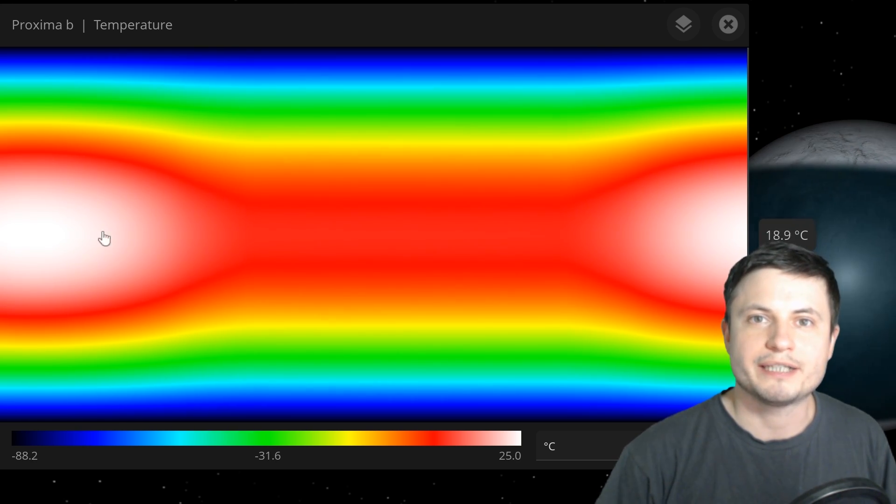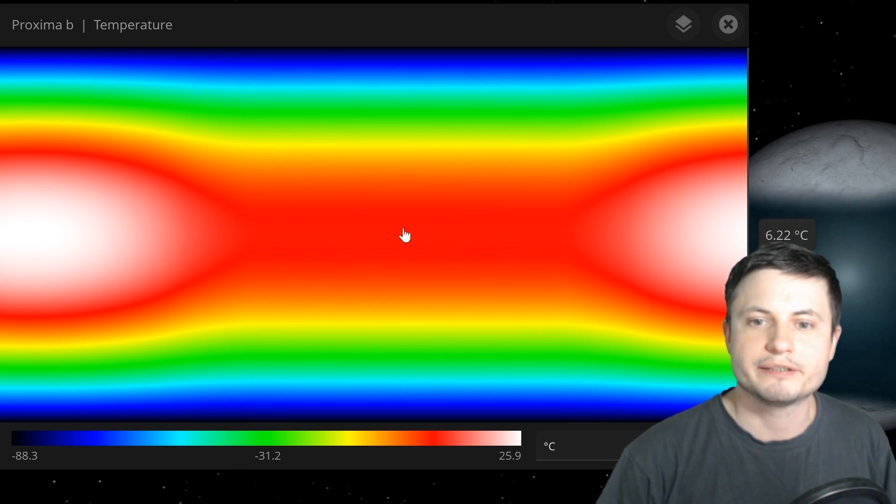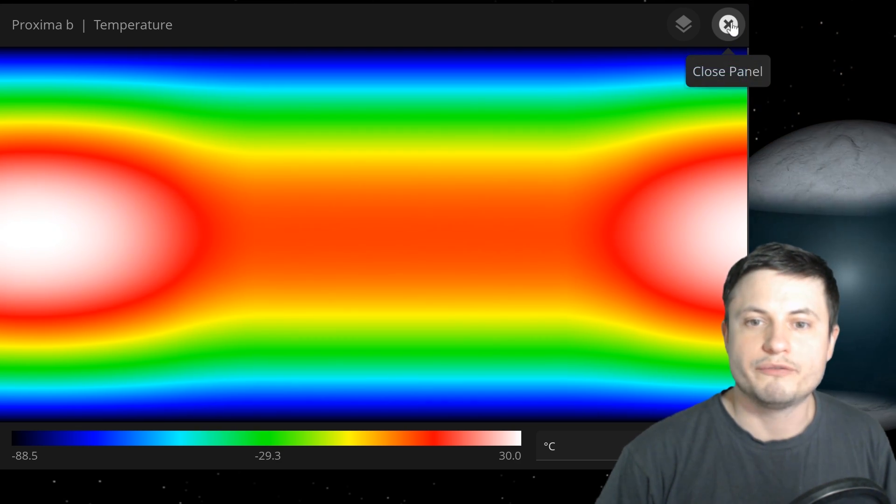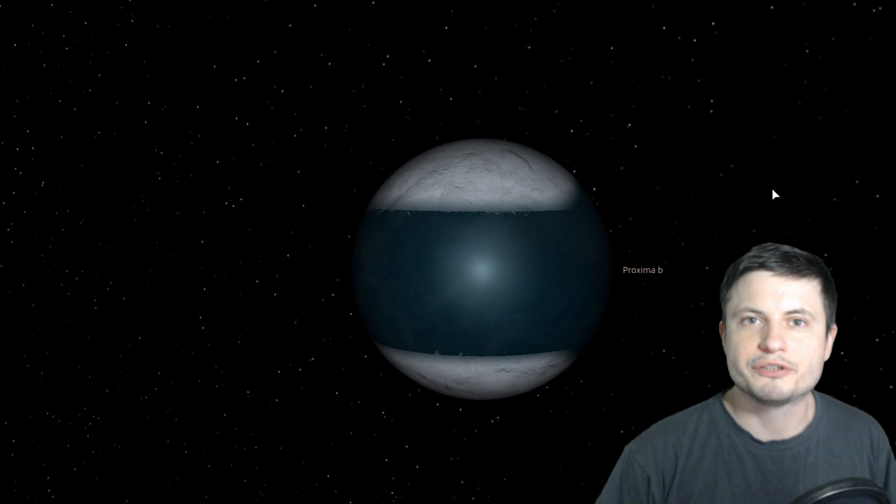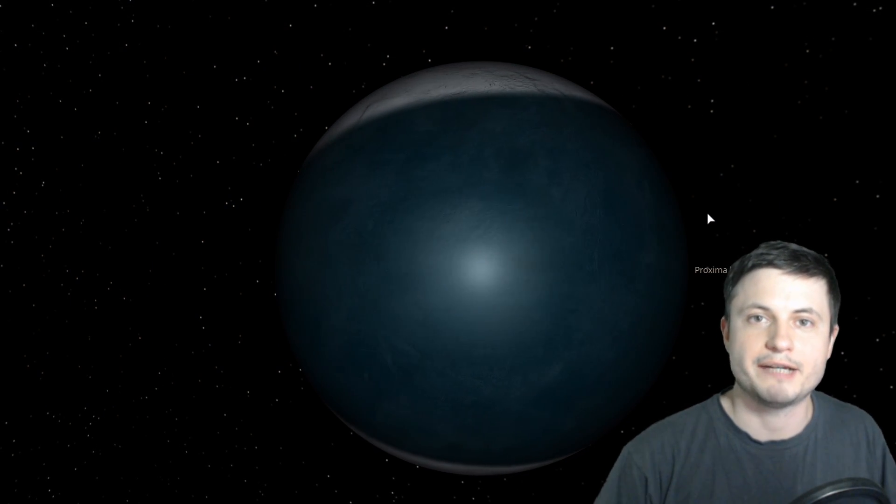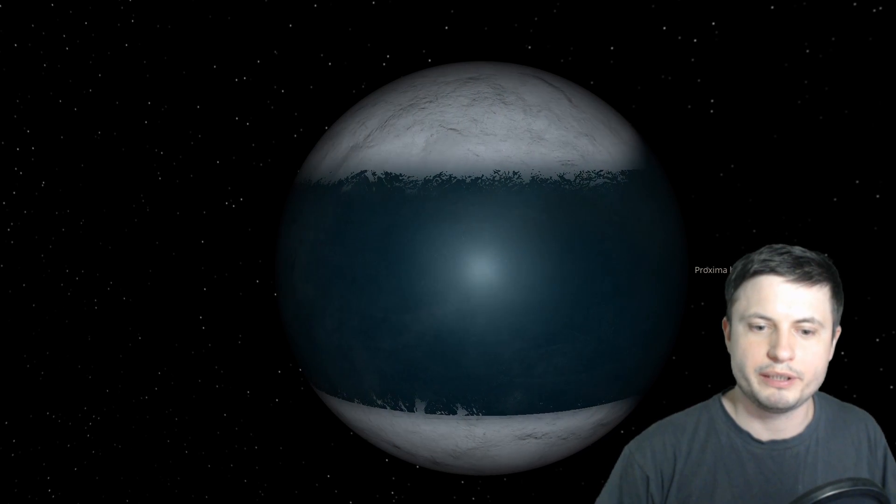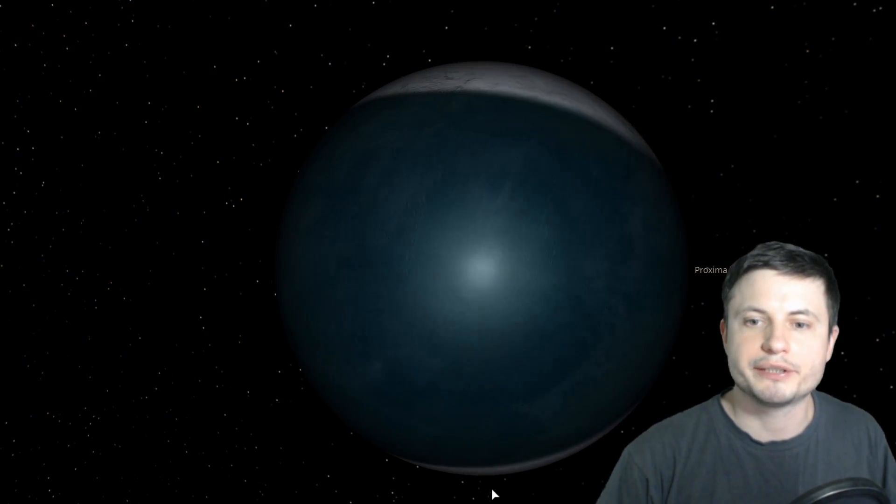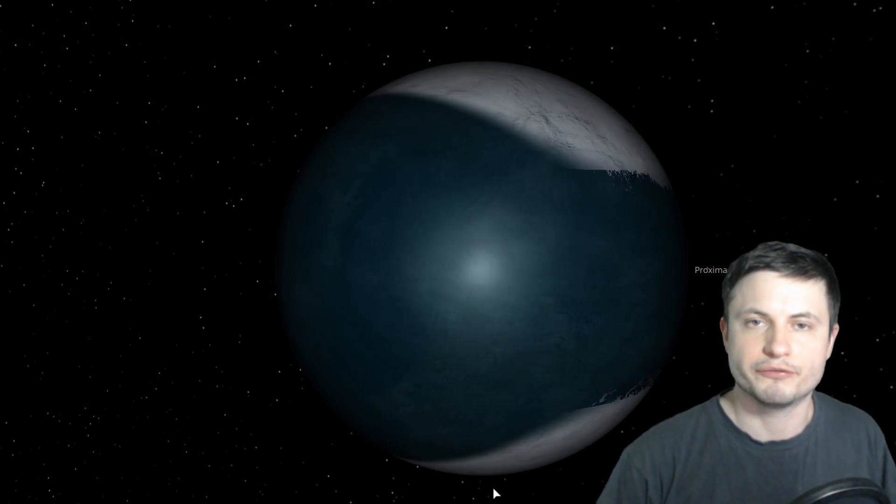Here you can see one side is already becoming a lot warmer, the other side is slowly cooling down, and this will eventually turn this planet into the so-called eyeball planet. You can see it's already transforming with one side having more water, the other side having more ice.